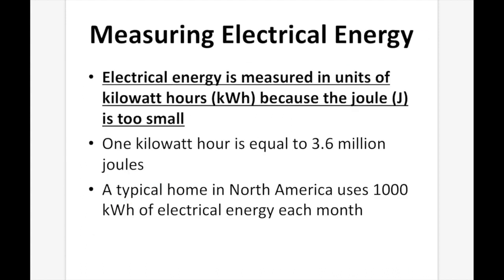Measuring electrical energy. Electrical energy is measured in units of kilowatt hours (kWh), because a joule is too small. Breaking it down: kilowatt is power, and h is time — so it's power in kilowatts times the time you're using it for. 1,000 watts equals 1 kilowatt, and one kilowatt hour equals 3.6 million joules. A typical home in North America uses 1,000 kilowatt hours of electrical energy each month. Power companies charge you per kilowatt hour — if an appliance uses 10 kilowatts and you use it for one hour, the energy used is 10 kilowatt hours.